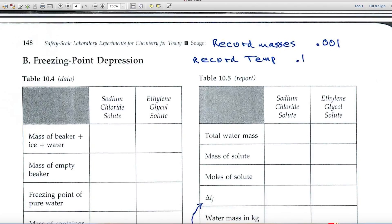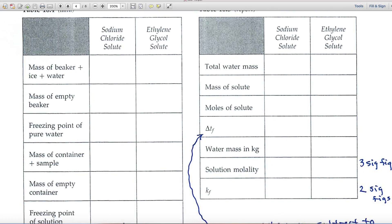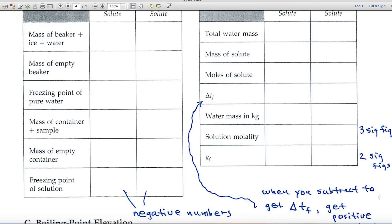Part B deals with freezing point depression. And again, you'll want to record masses to the thousandth, temperatures to the tenth. And you'll be looking at two different solutions, a sodium chloride solution and ethylene glycol solution. And one of the colligative properties of solutions is that when you make a solution, the more concentrated the solution is, the lower the freezing point.